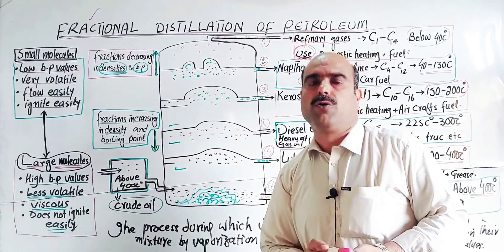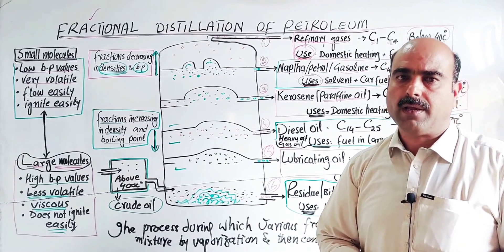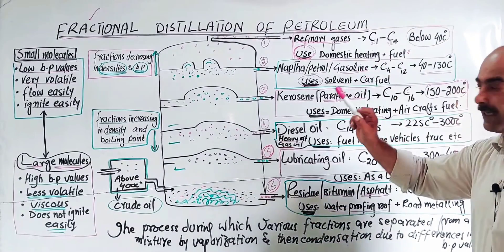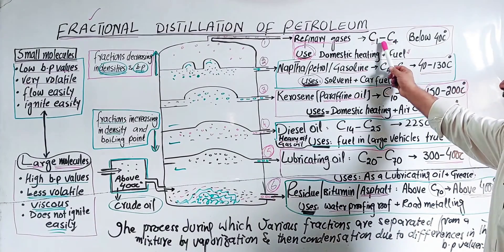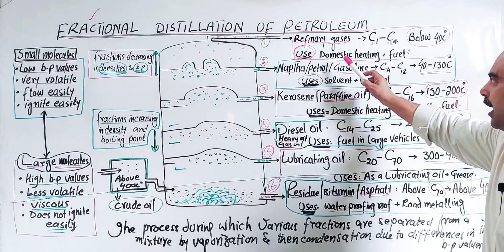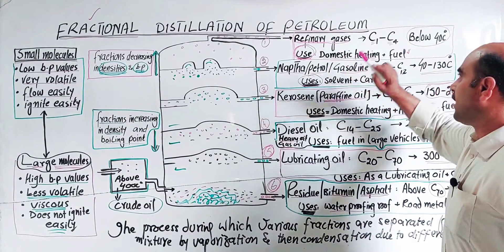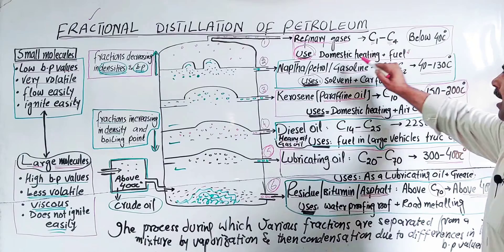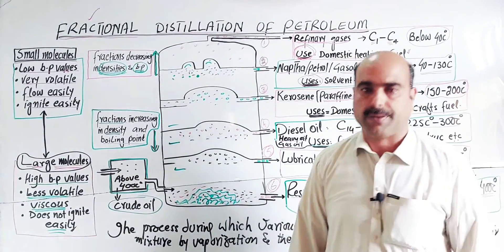So students, these were all about fractional distillation of petroleum - the fractions that are removed, their names, molecules, boiling point range, and uses. The important points are fraction name, boiling point, and use. Thanks a lot for watching the video.